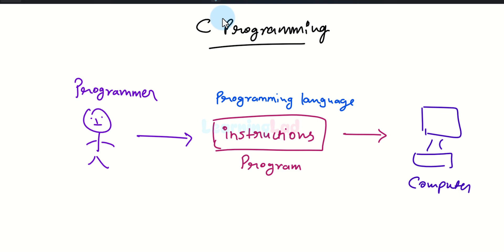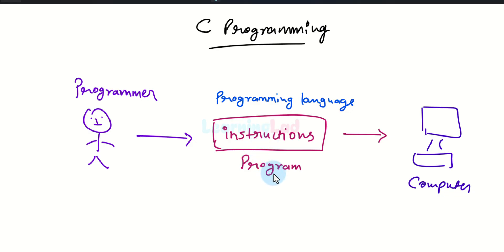Welcome to another video on C programming language. In this video we will talk about the language that the computer speaks, and also we will talk about the compilation and interpretation methods. In the previous video we have seen that the programmer will use a programming language and provide instructions to the computer, which we call as a program, and according to these instructions the computer will work.